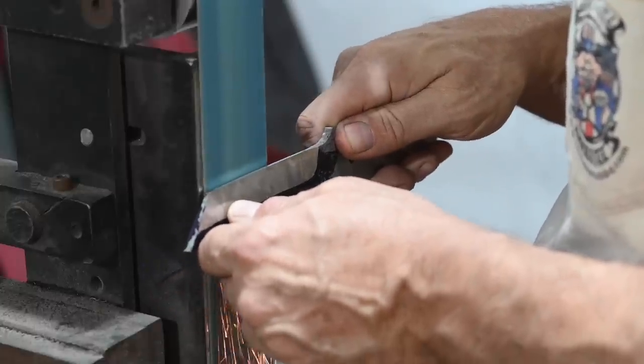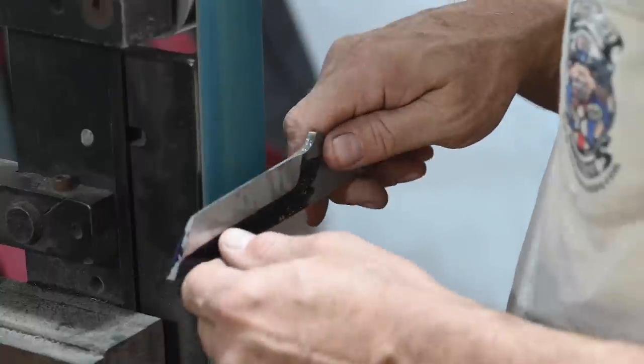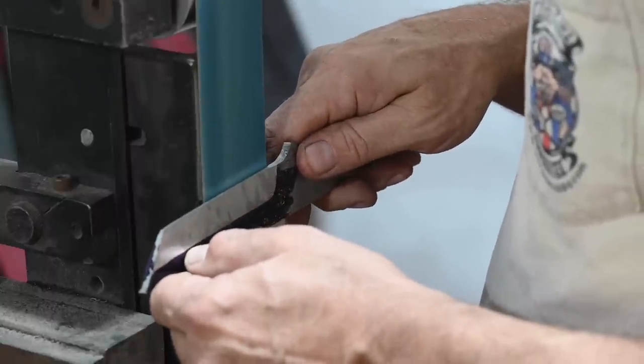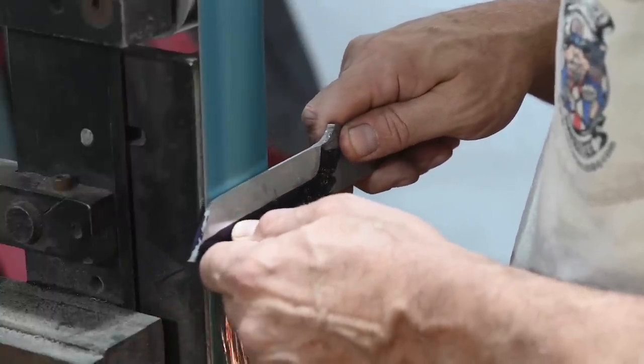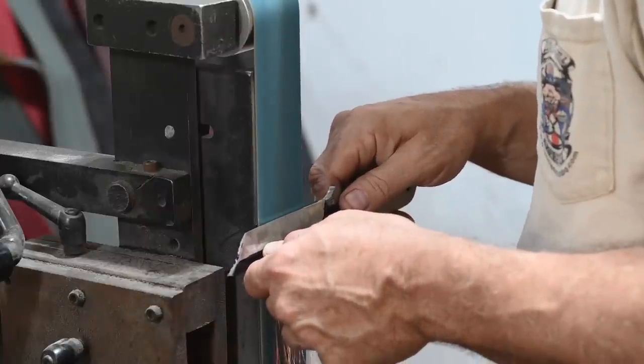A couple pointers. Again, I'm using the same trick I did with the jig. When things aren't dead straight, when you have a little wobble or a sag in that grind line, just use that corner to very, very gently ease the line straight.